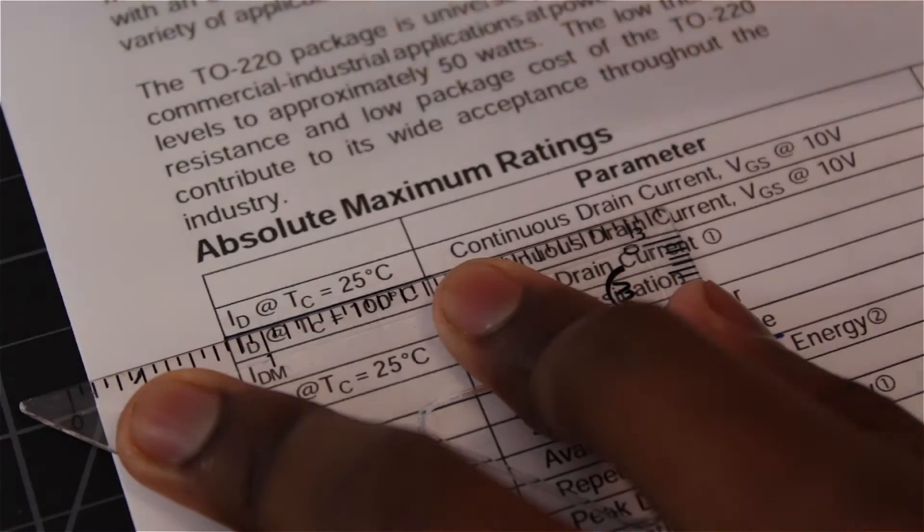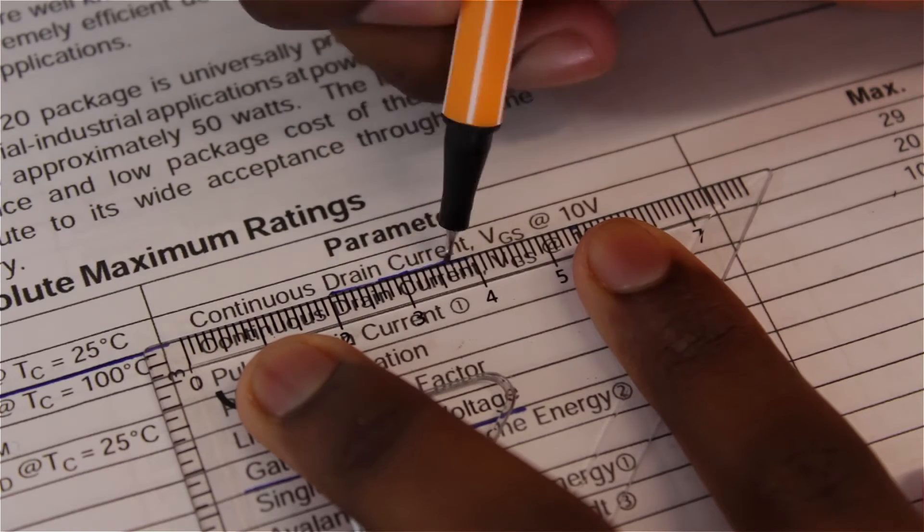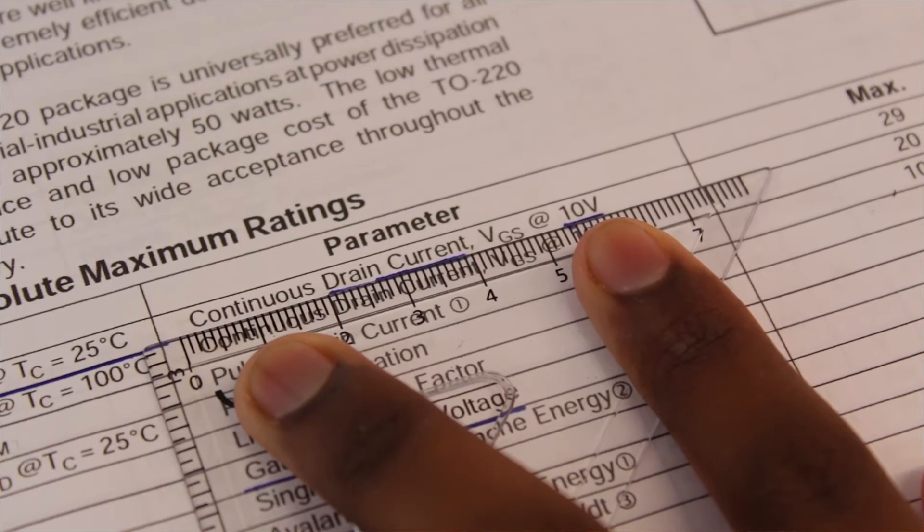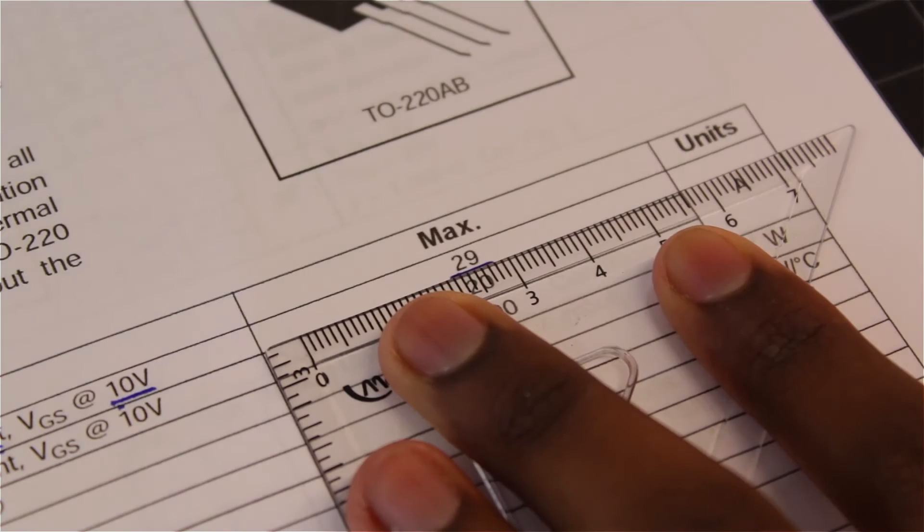Another is the continuous drain current. Depending on the temperature, this value tells us the max amount of current this MOSFET can handle. At 25 degrees Celsius and a gate voltage of 10 volts, this value is 29 amps.